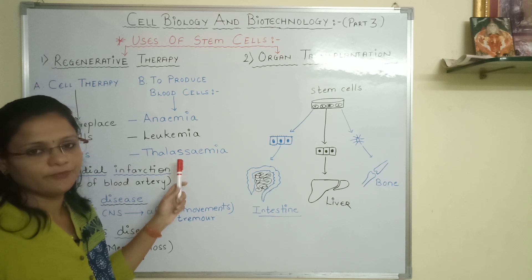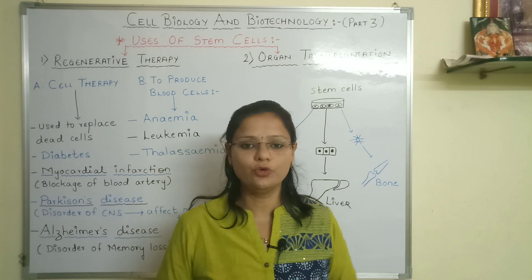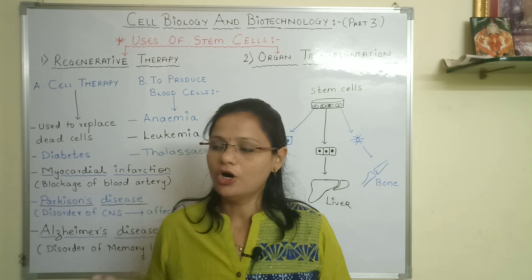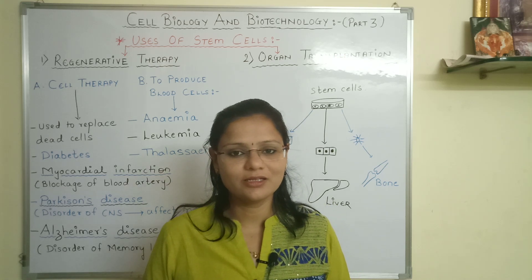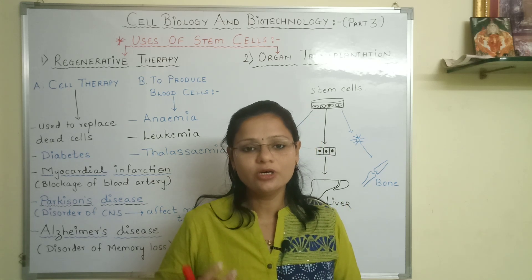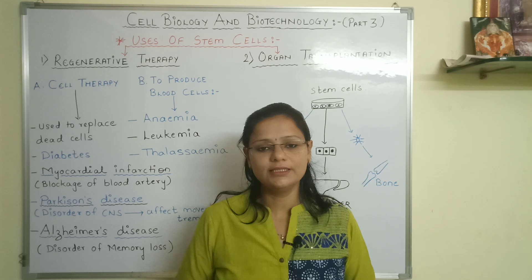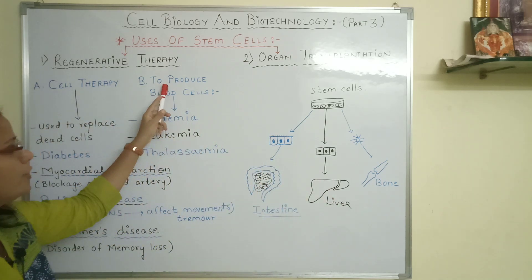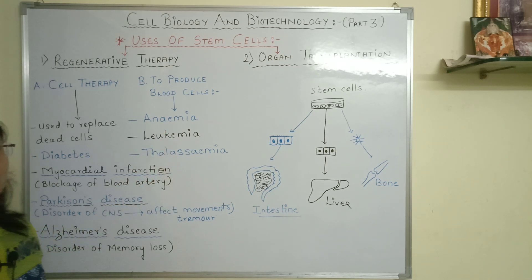Next is thalassemia. Blood cells carry hemoglobin, which is a protein that carries oxygen. In thalassemia, the hemoglobin in blood cells is affected, so the body's oxygen-carrying capacity decreases and the body's tissues and cells don't receive enough oxygen. Thalassemia can also be cured with the help of stem cells. So blood cells can be produced in case of anemia, leukemia, and thalassemia.